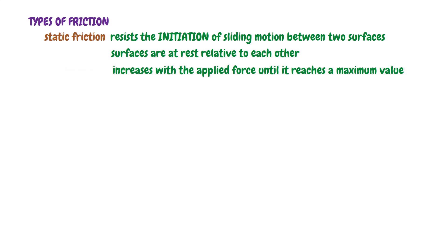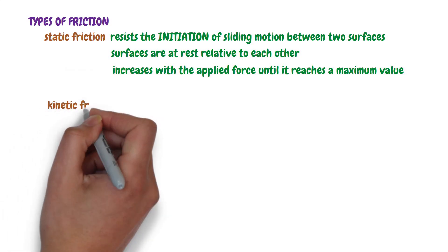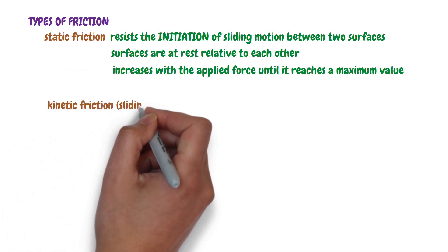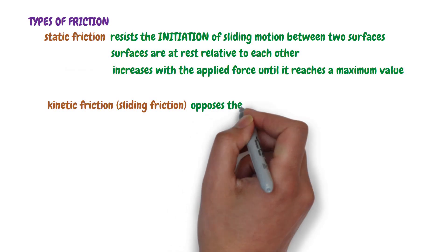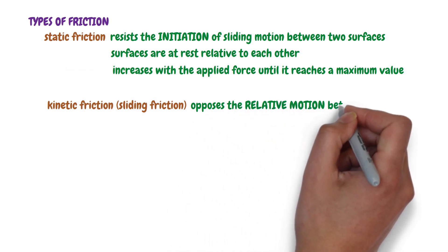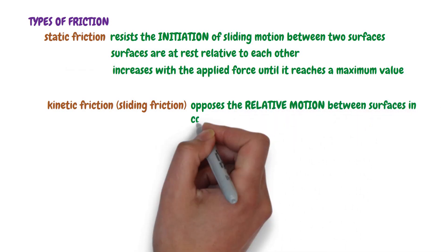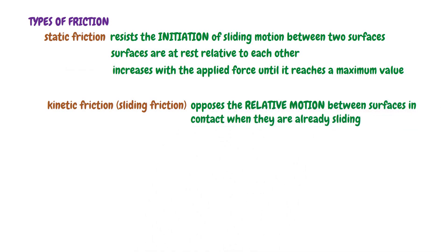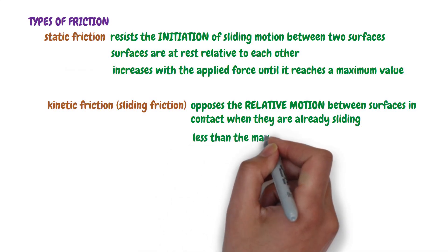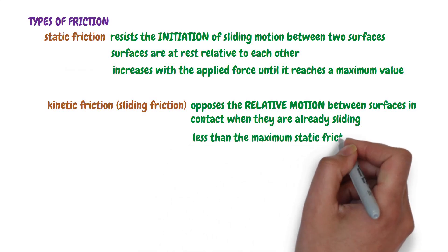The second is kinetic friction, also called sliding friction. Kinetic friction is the force that opposes the relative motion between surfaces in contact when they are already sliding. Kinetic friction is generally less than the maximum static friction.